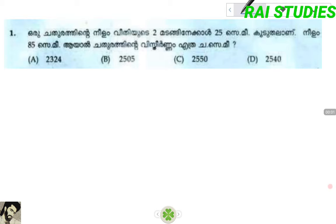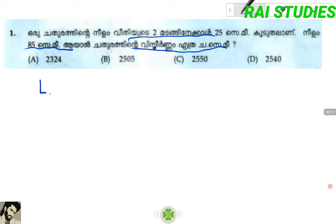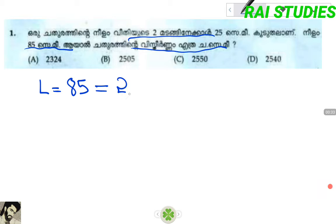Let's go first. One chadurath is 25 cm. The chadurath is 85 cm. The chadurath is 25 cm. The chadurath is 25 cm. The chadurath is 85 cm. This is the chadurath. Here is the equation. The chadurath one is 25 cm. If you have a chadurath, the chadurath is 25 cm.